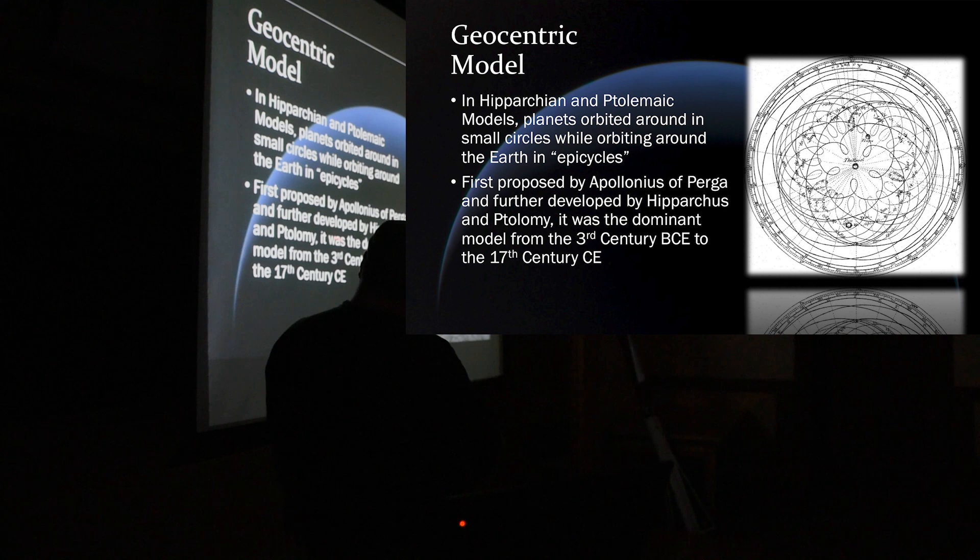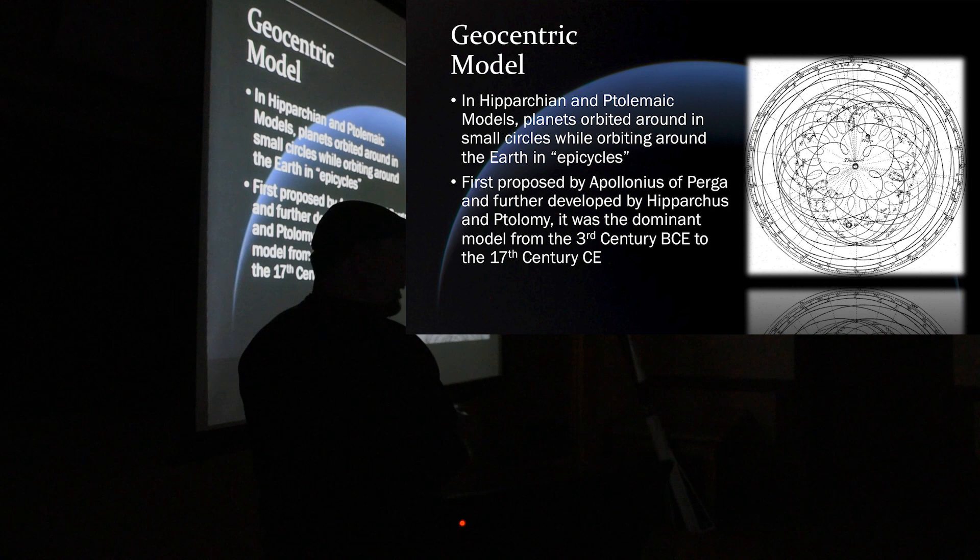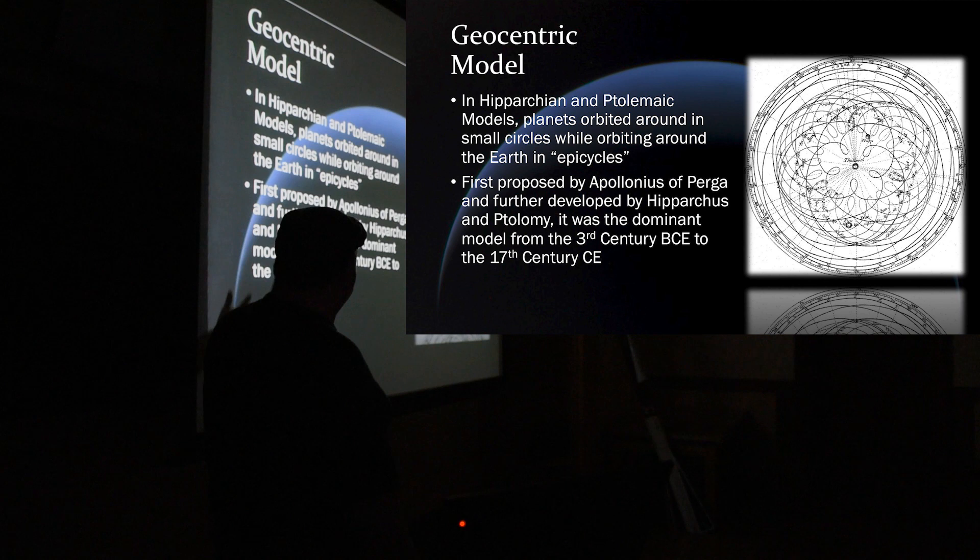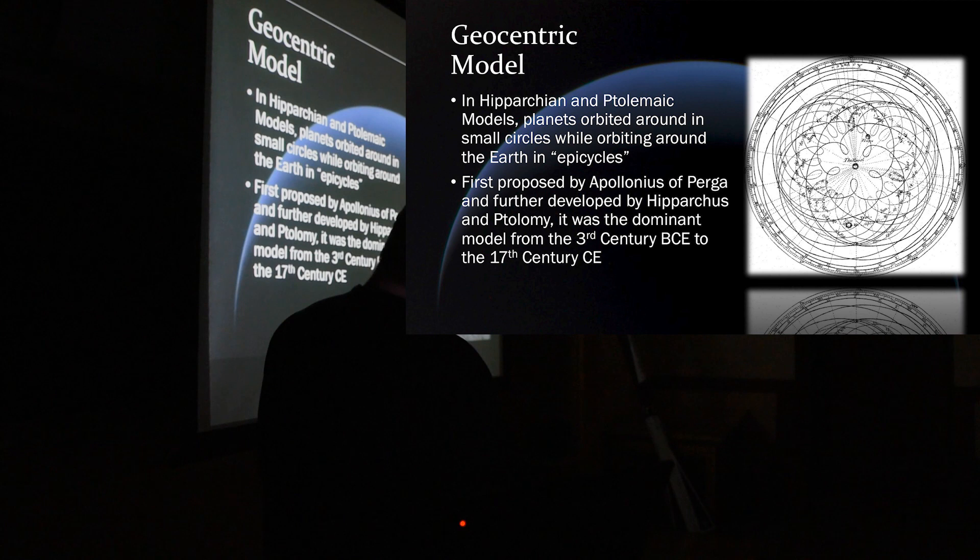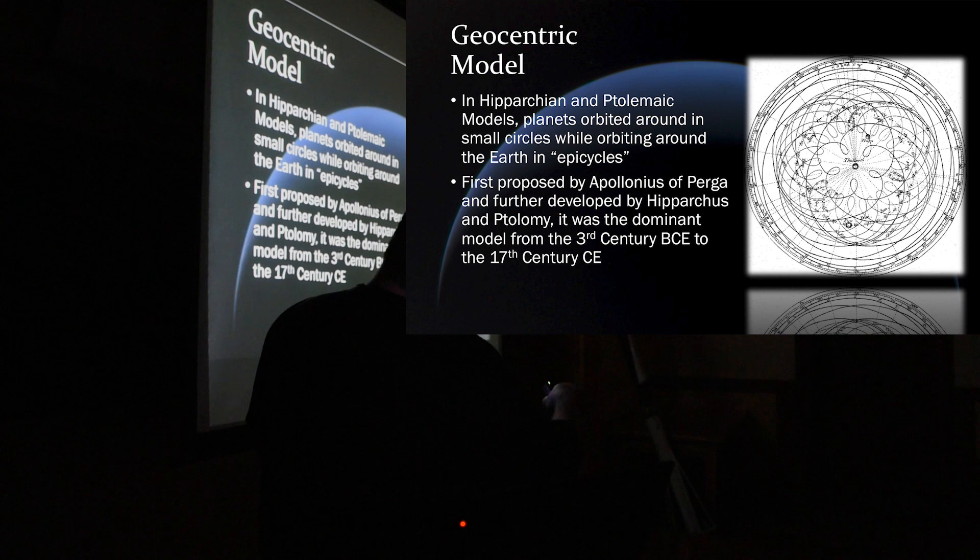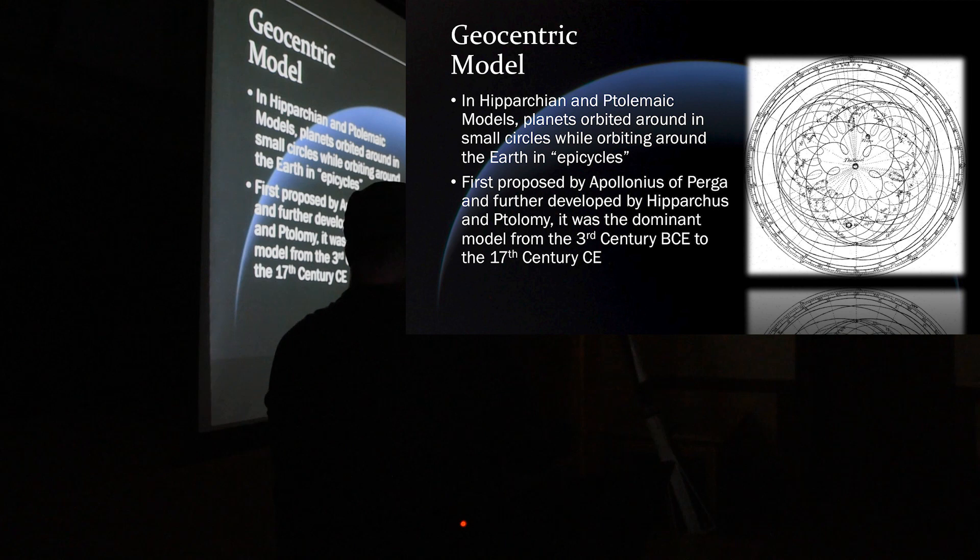There's a guy named Apollonius. He kind of came up with this idea, and it was further developed by Hipparchus and Ptolemy afterwards. And this was kind of the dominating solar system model all the way up to the 17th century. I thought that was kind of a neat-looking representation of the retrograde motions of the planets from the perspective if you're looking down at Earth. So this is the geocentric model.